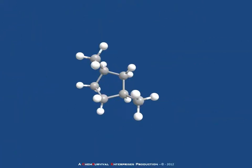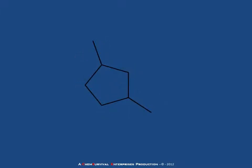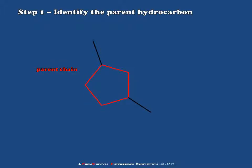Now let's take a look at a cyclic hydrocarbon which actually has a few substituents and see if we can name it using IUPAC convention. Here's the skeletal structure for the compound. The first step is to identify the parent, which should be the chain containing the ring. In this case, we have a 5-membered ring. Notice that there are other chains within the molecule which can produce a 5-carbon chain, but we do not use these because the cyclic nature of the parent hydrocarbon overrides this decision. So this will be our parent chain.